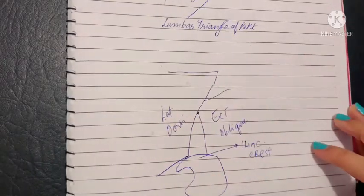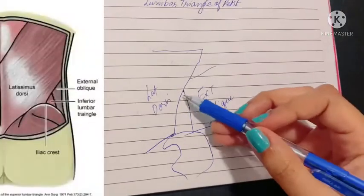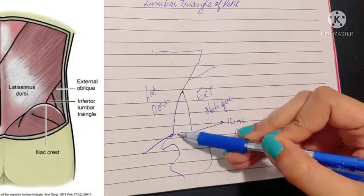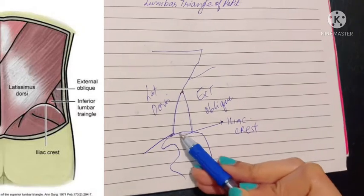Now we have another triangle, the lumbar triangle of petite. This triangle is also a very small triangle located right here. This is the hip bone and this is the iliac crest part of the hip bone.